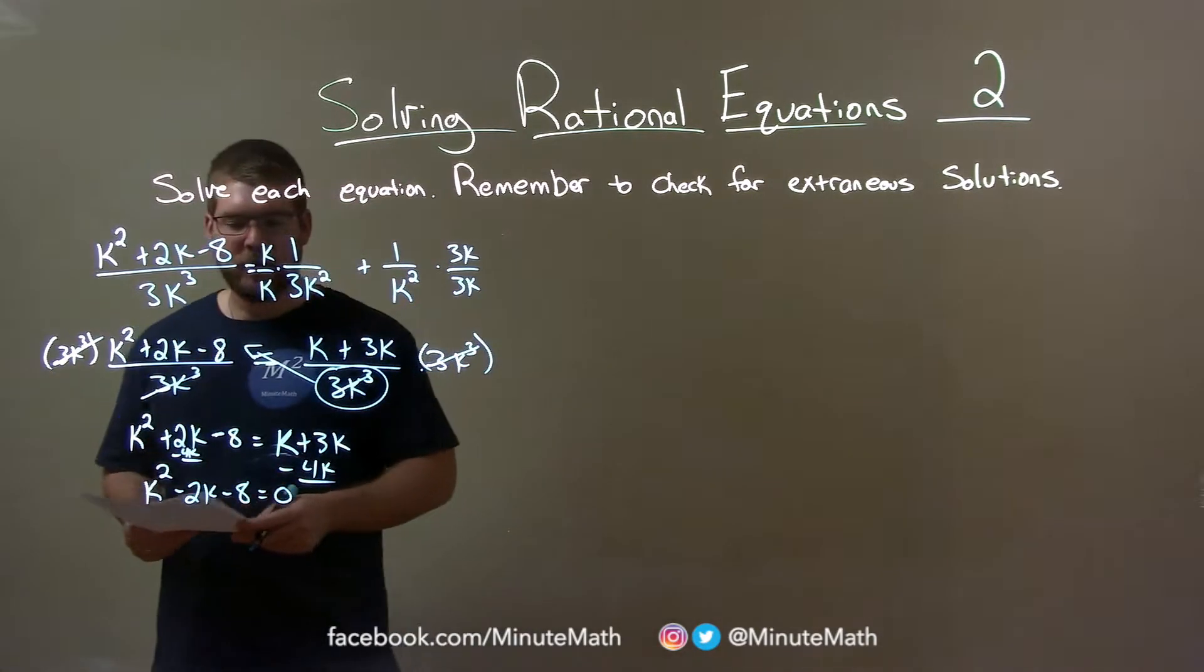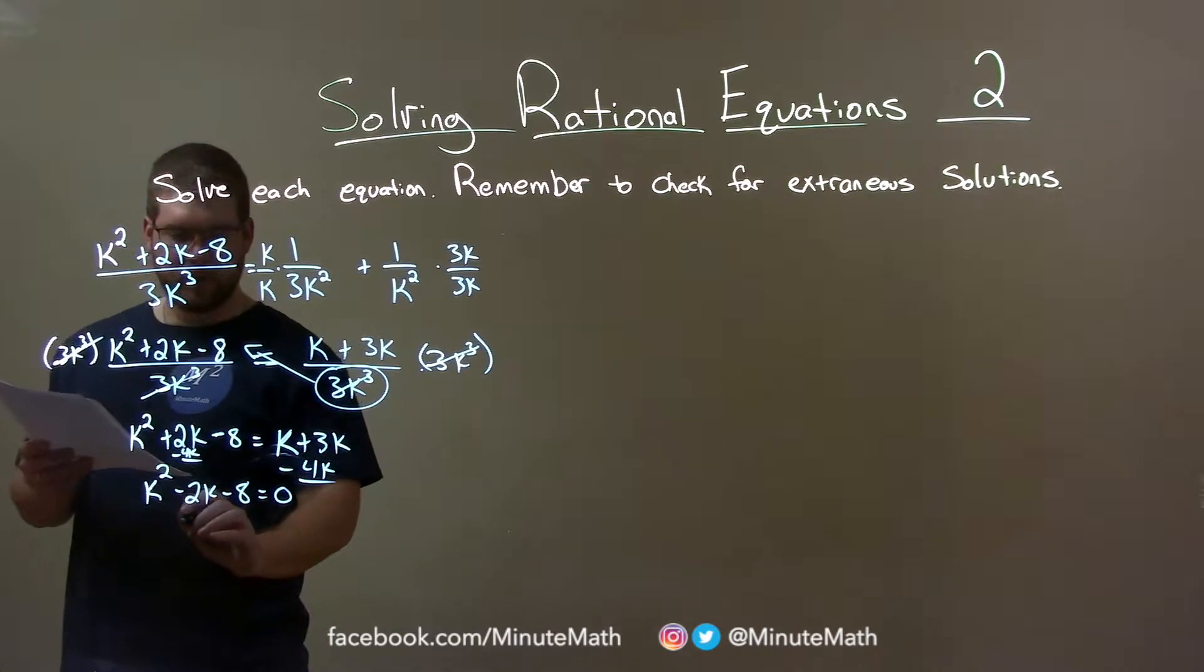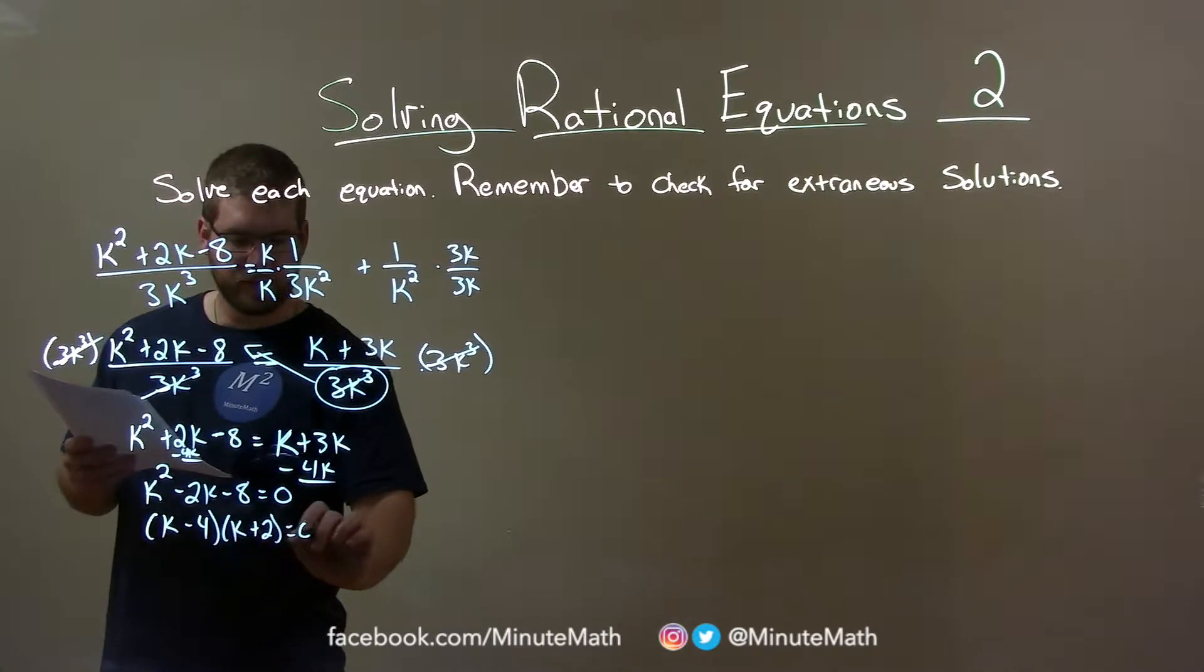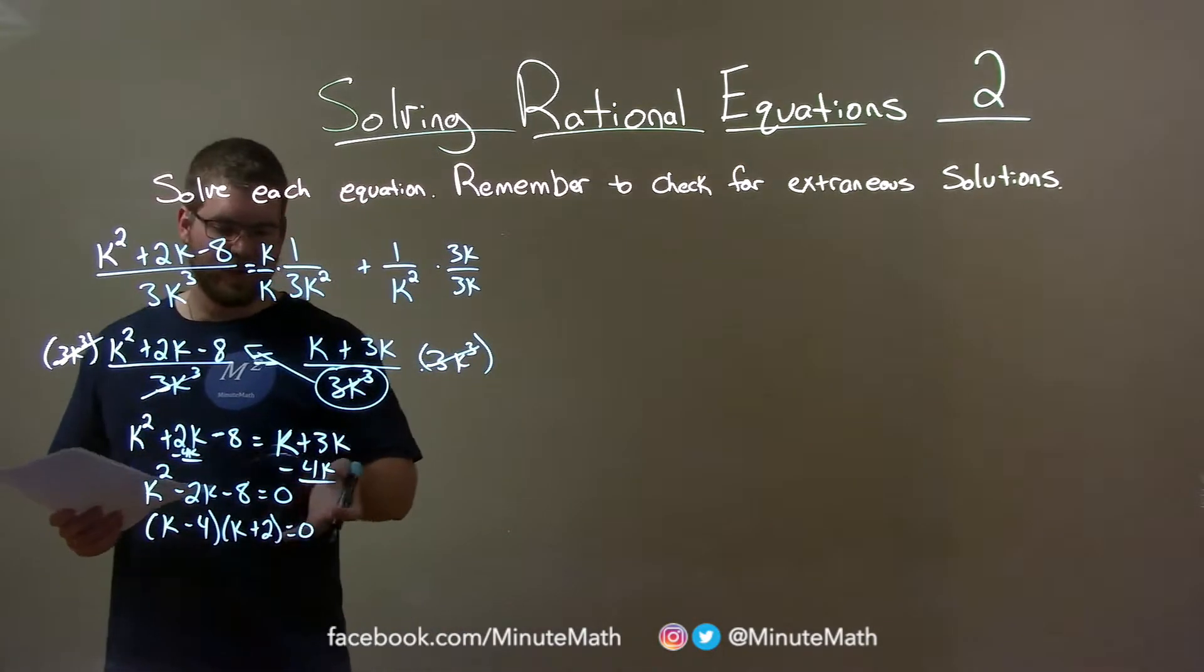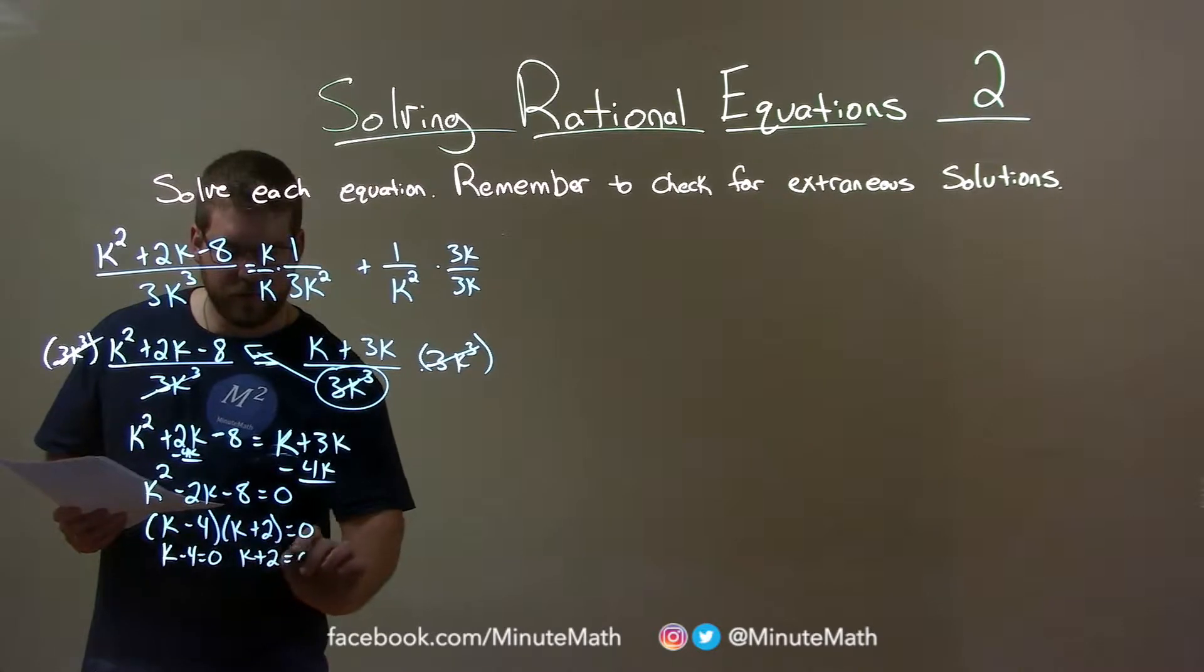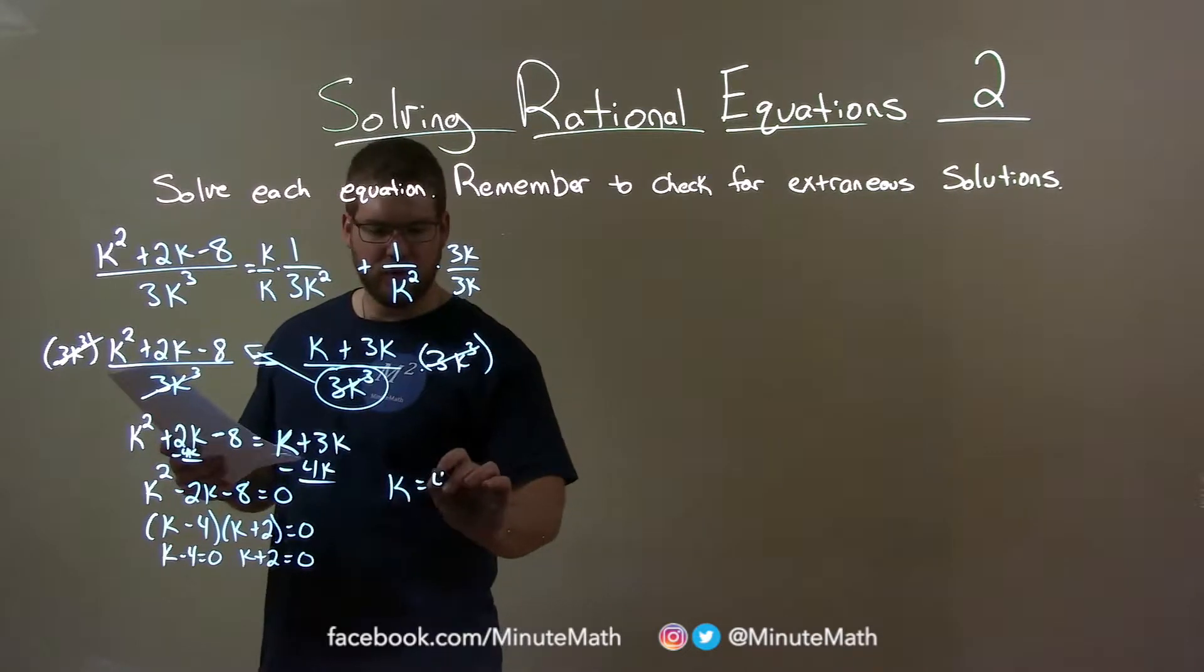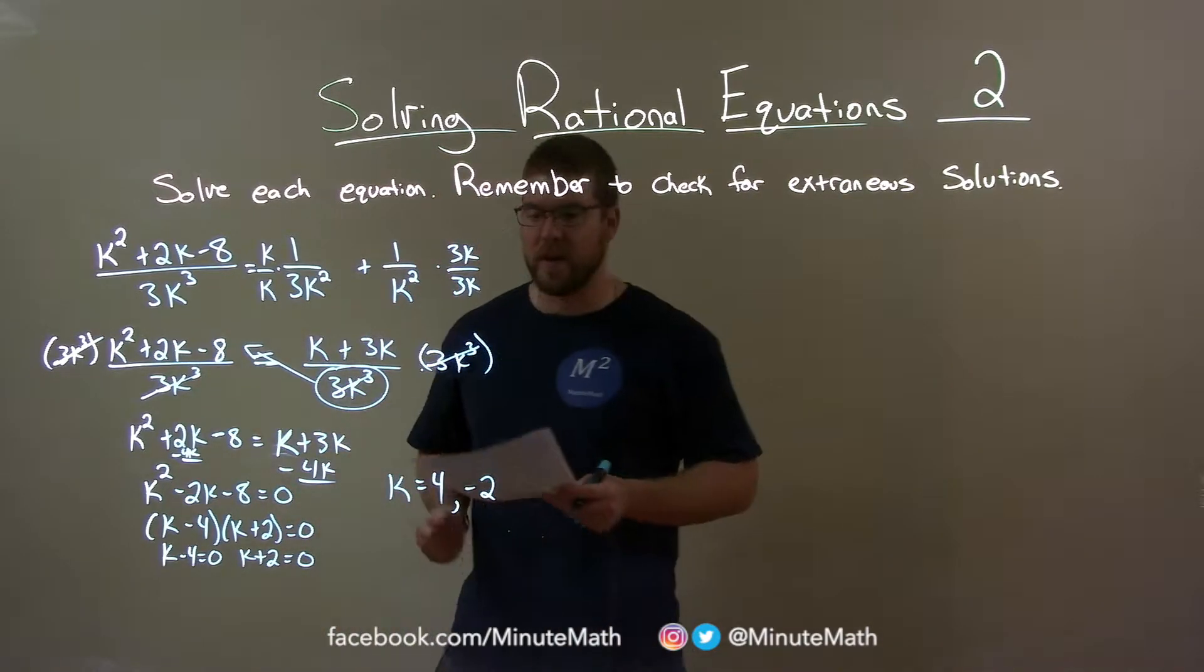Well, this factors. What two numbers multiply to be negative 8 but add to be negative 2? And that's minus 4 and positive 2. So we have k minus 4 and k plus 2, and that's equal to 0. So solving that, it's pretty easy. We set each one equal to 0. k minus 4 equals 0, k plus 2 equals 0. And so my two options for k here are k equals a positive 4. Remember? Add 4 to both sides. And a minus 2. Or minus 2 positive 4, however the order you want to have.